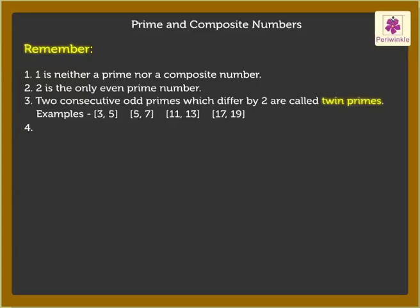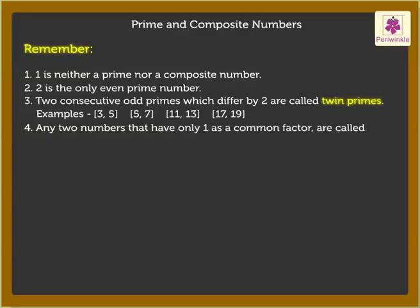Any two numbers that have only one as a common factor are called Co-Prime Numbers.